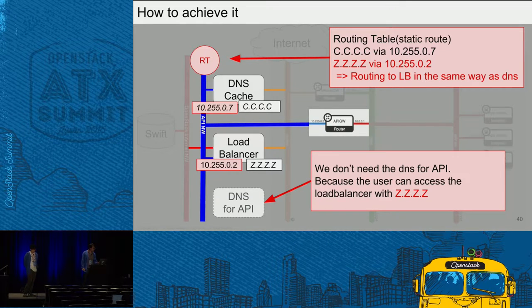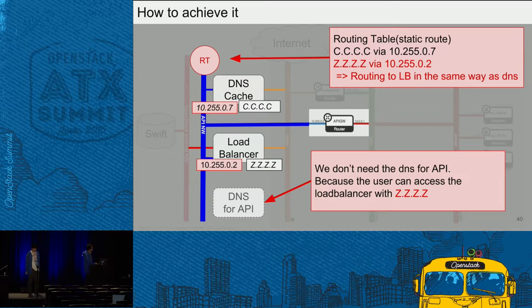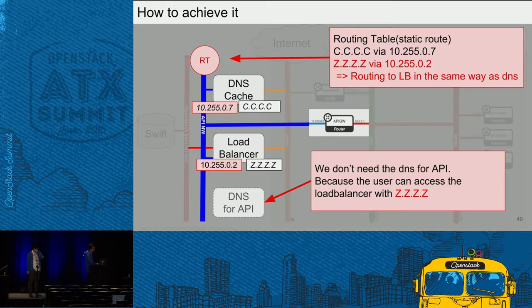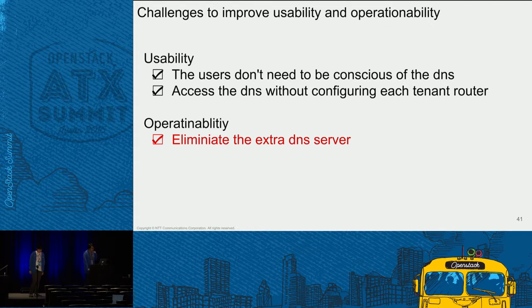This third challenge is simple. In the same way as the DNS, we inject a static route for the endpoint IP to the extra router. This enables us to access the load balancer with the public IP from the private network. Previously it was accessing the load balancer with the API network IP. Now that we can reach the load balancer with the public endpoint IP from the private network, we don't need to prepare an extra DNS server and can use a DNS cache instead. The explanation of the improving challenges is finished, and we have improved usability and operational ability.